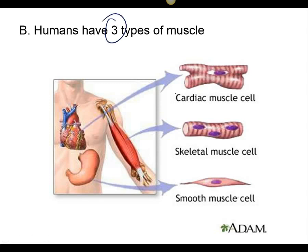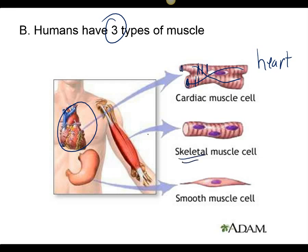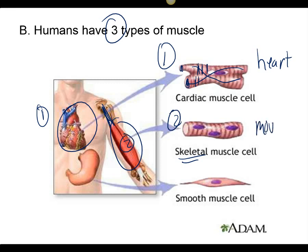Three types of muscle. The first muscle is cardiac muscle — this is your heart. The cells are branched and have stripes called striations, and structures called intercalated discs. Skeletal muscle is attached to the skeleton and is mainly for movement. You can see individual cells here.